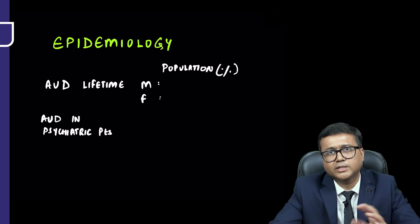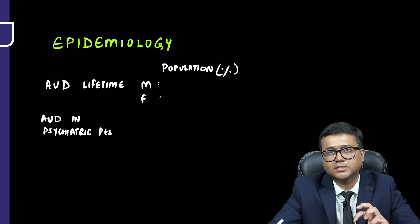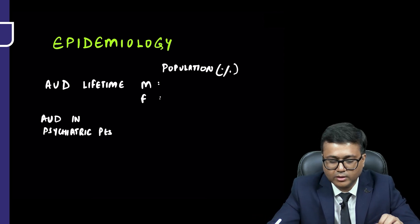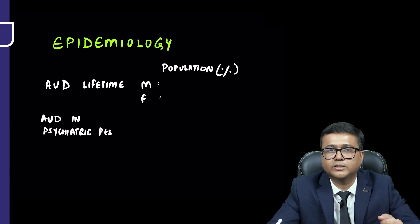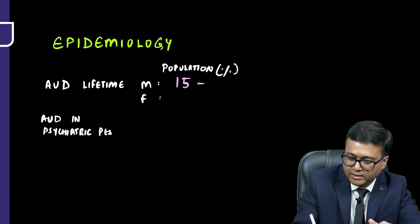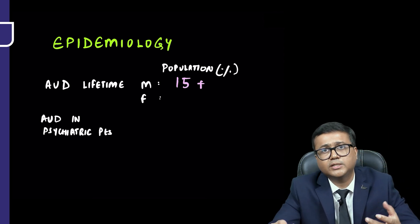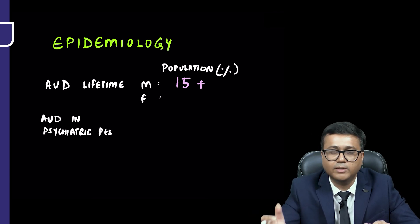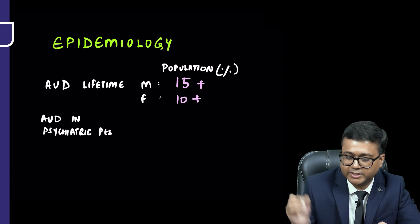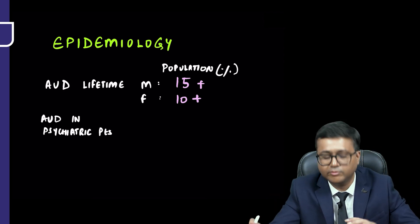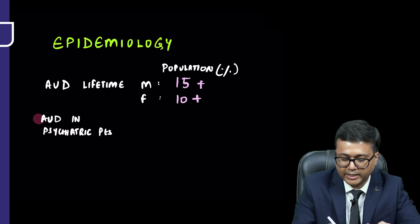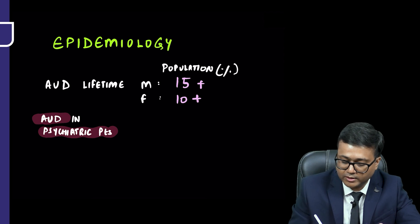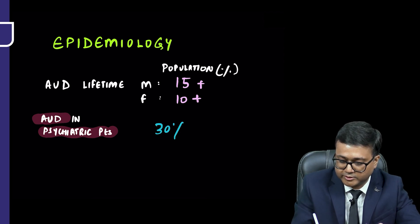The prevalence data is across various studies and is taken from Kaplan. The lifetime prevalence of alcohol use disorder in males is 15% or more, while in females it is 10% or more — so it is more common in males. When we look at prevalence in psychiatric patients, it is even higher — the lifetime prevalence is 30%.